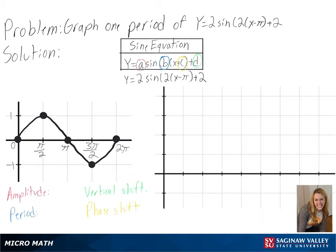We can see that our phase shift is a positive pi, so we will move our y-axis pi units to the right. We also have a vertical shift of 2, which will make our whole graph go up 2 units, so our center will be at 2.